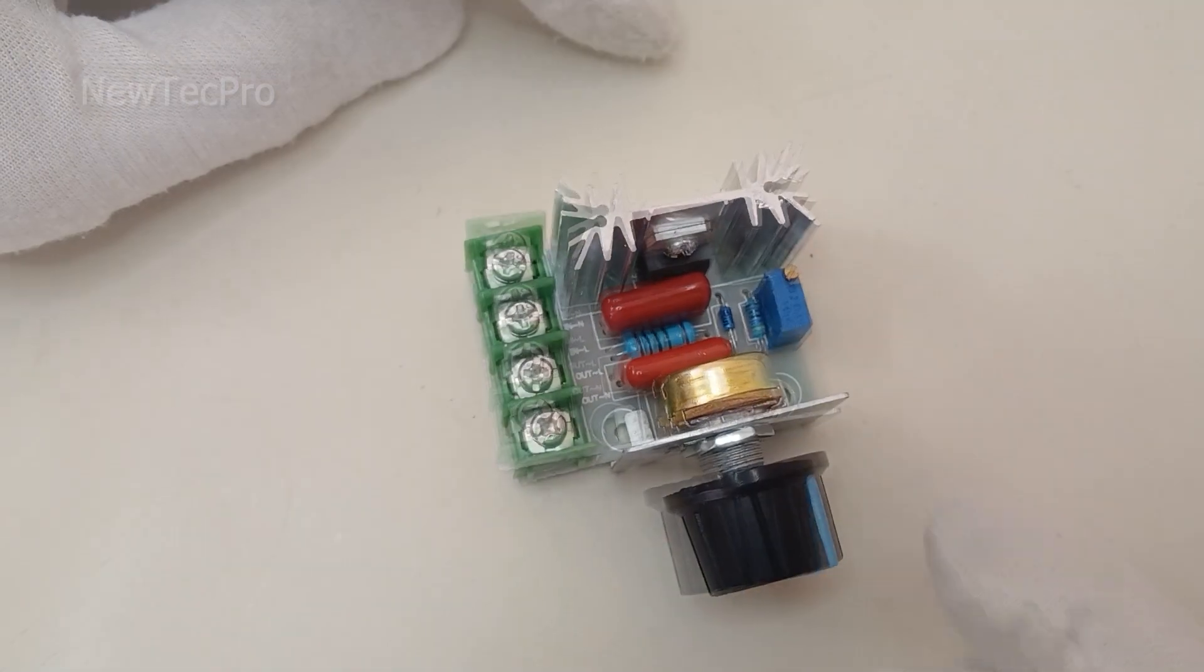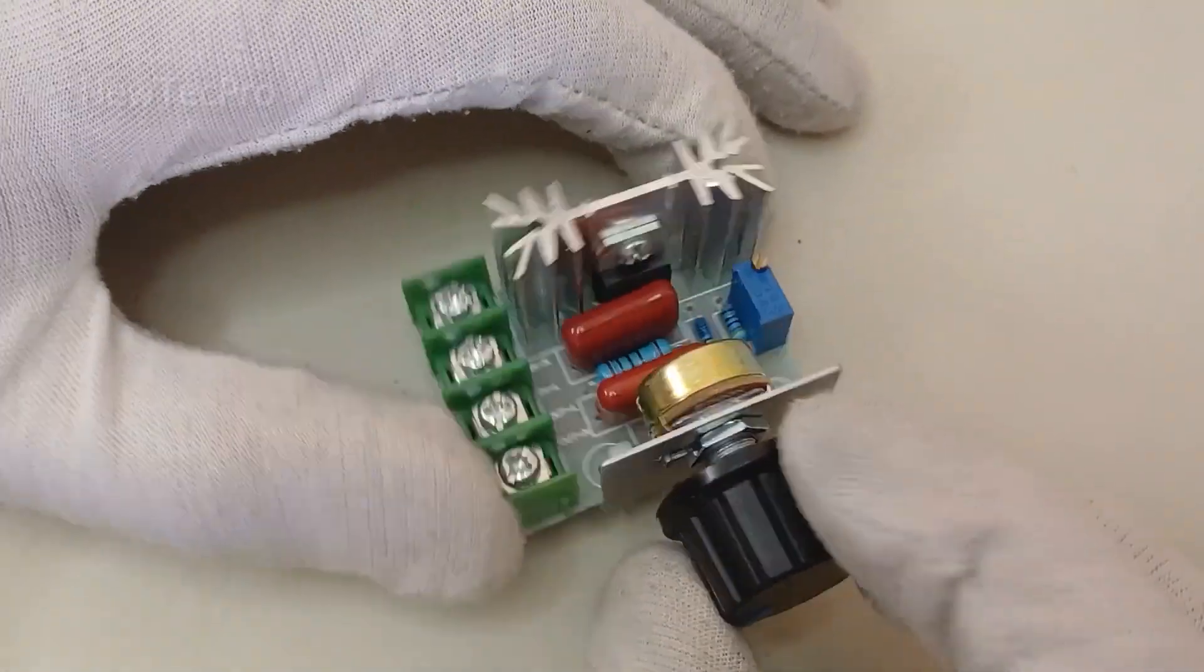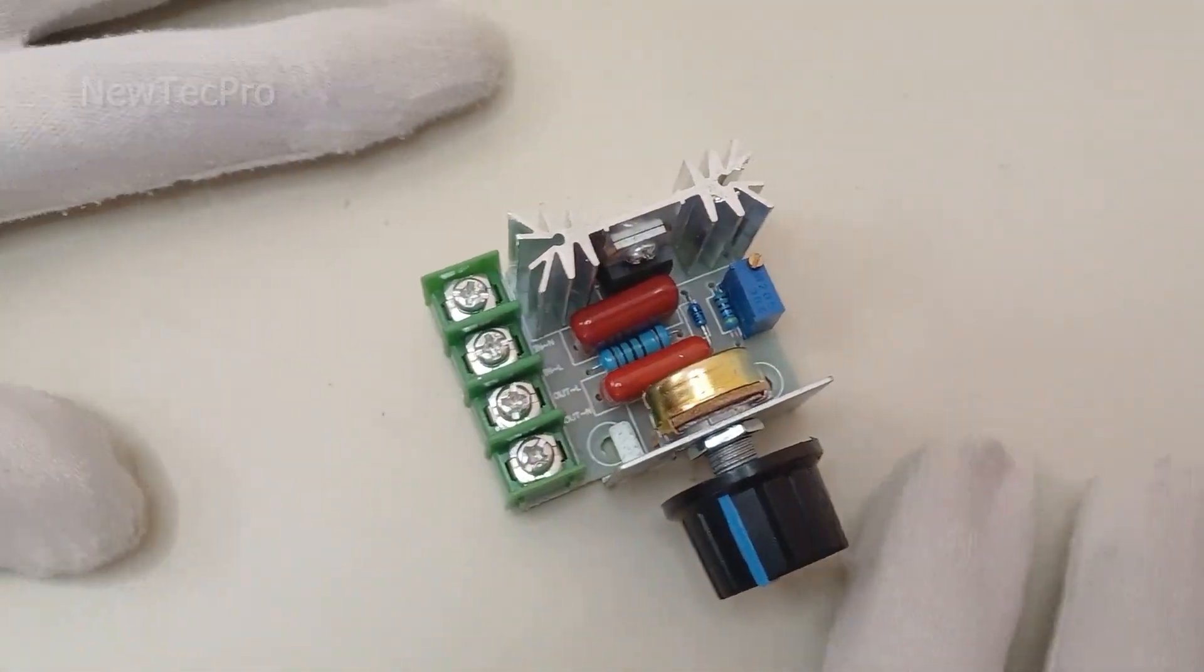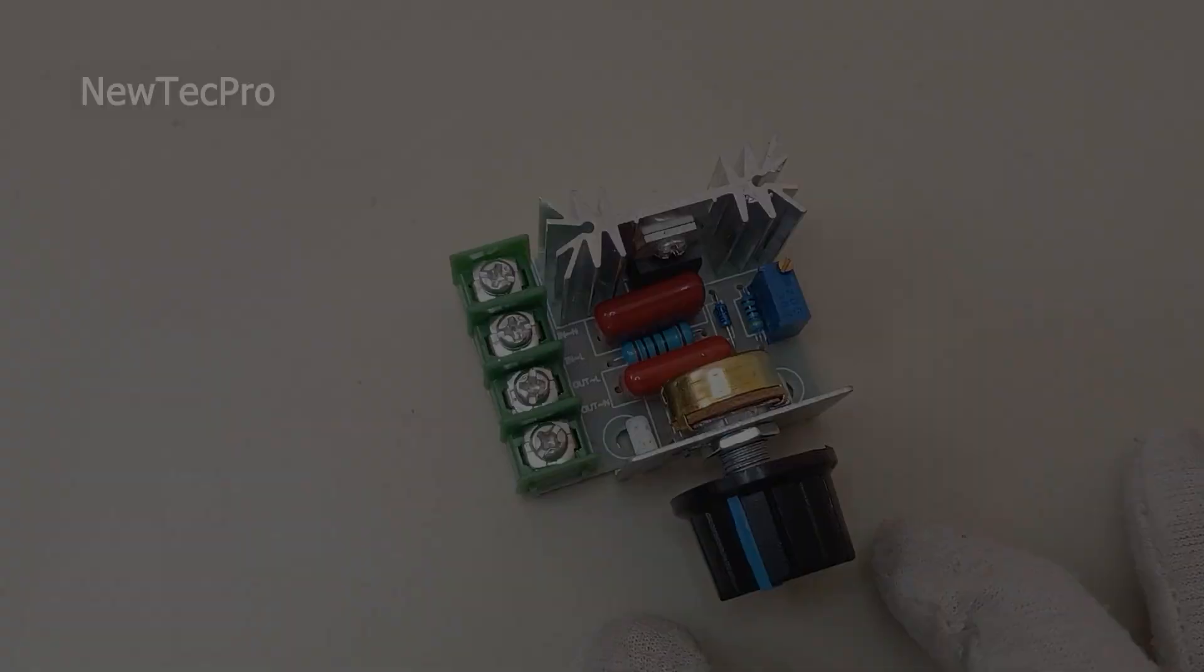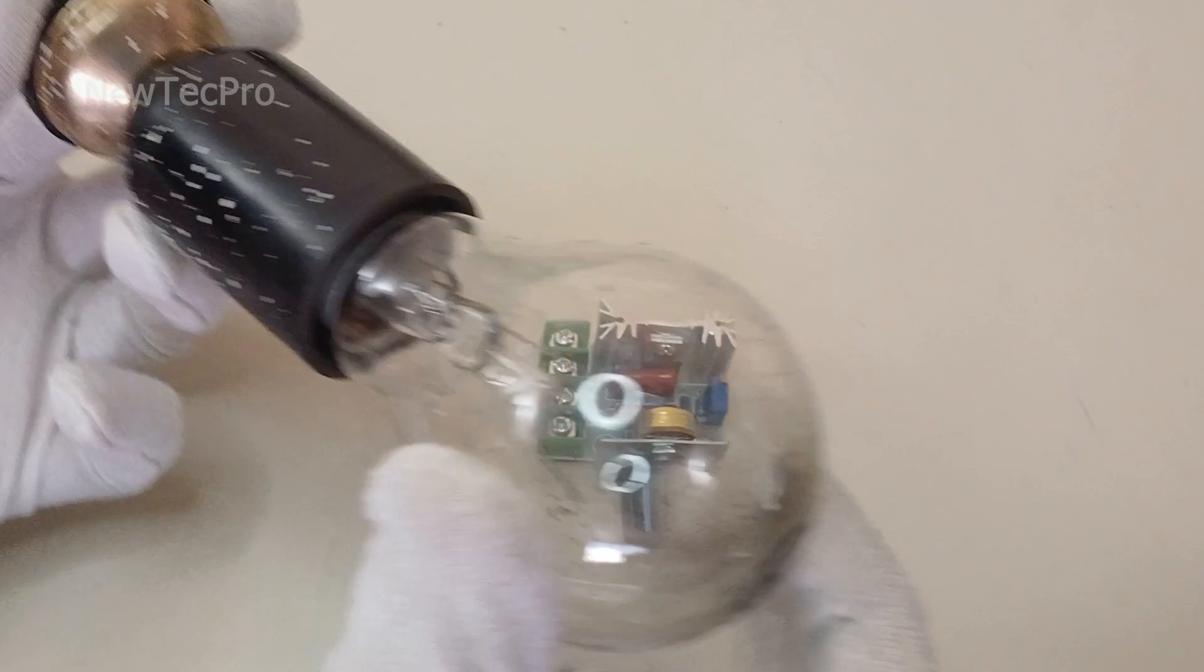Always remember to turn off the power before handling electrical components. We'll start by connecting the dimmer to an incandescent bulb first.